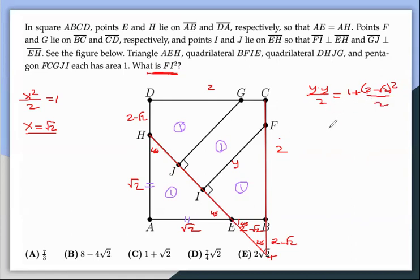If I multiply by two, you get y squared, which is what we're looking for, equals two plus four minus four root two plus two, the square of the binomial. That should give us eight minus four root two.